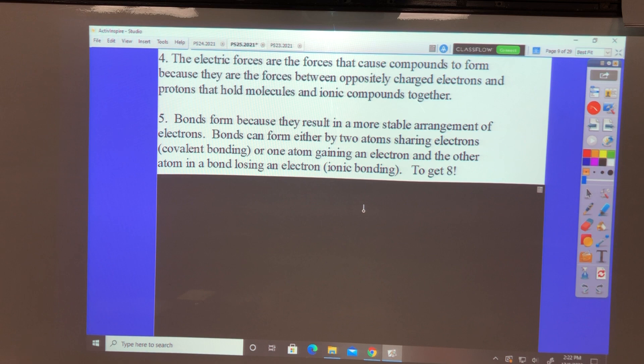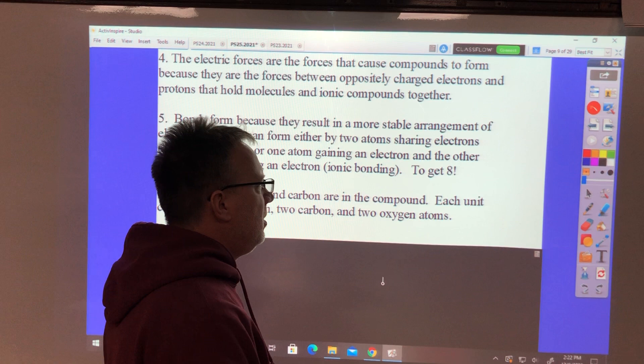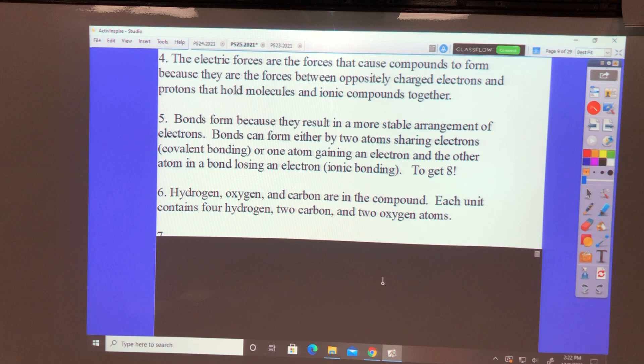Number six: The label on a box of cleanser states that it contains CH3COOH. That's acetic acid, it's vinegar—well, it's the active ingredient of vinegar. What elements are in this compound and how many elements of each can be found in a unit of CH3COOH? You've got hydrogen, oxygen, and carbon. And there's four hydrogen, two carbon, and two oxygen atoms. Four hydrogen, two carbon, and two oxygen.